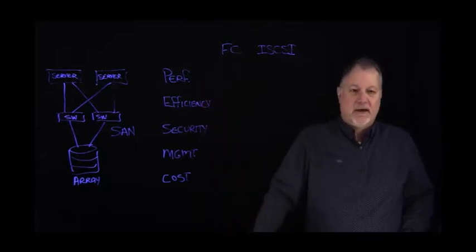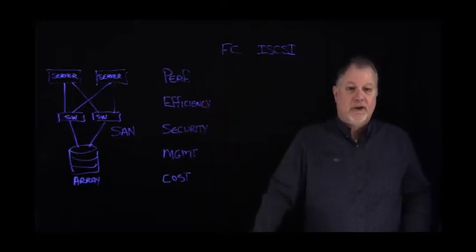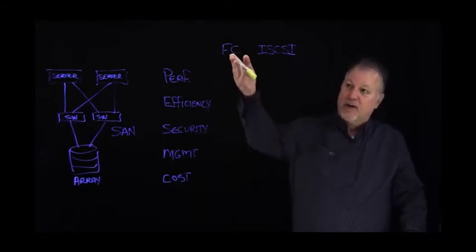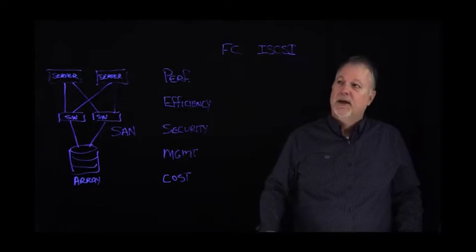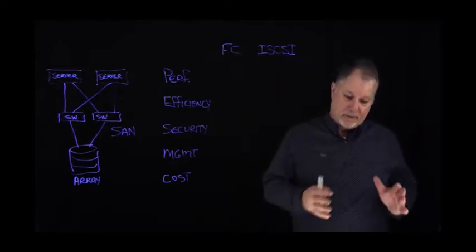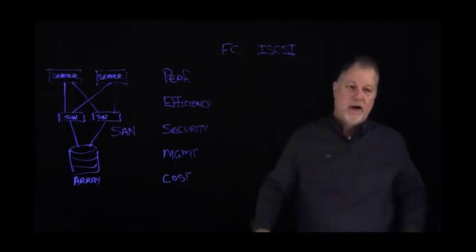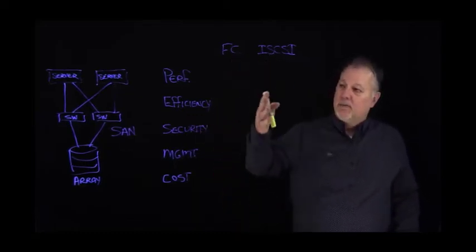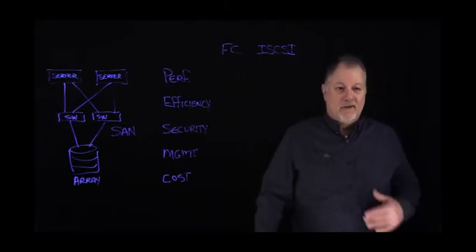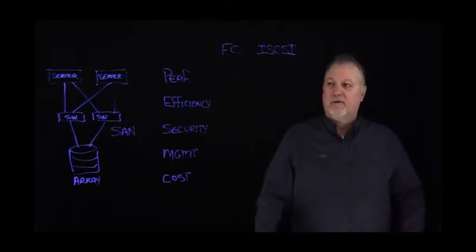Now there's a bunch of different protocols that we can use. We can use Fiber Channel, we can use iSCSI, we can use FCoE, we can use InfiniBand. The two most popular that you'll find from the SMB to the enterprise markets are going to be Fiber Channel and iSCSI. And I want to explain a little bit about what the difference is and when customers use one versus the other.